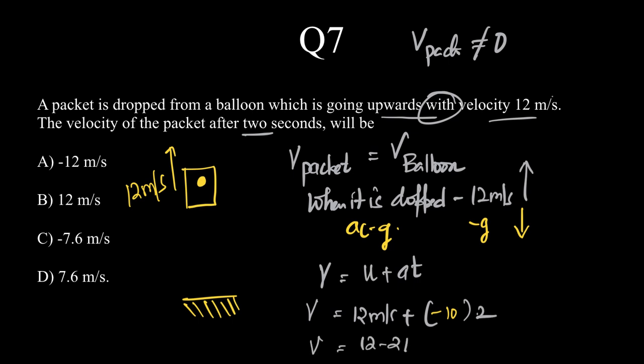So we get v equals 12 minus 20, which is minus 8 m/s. Right, this is pretty accurate. Thank you.